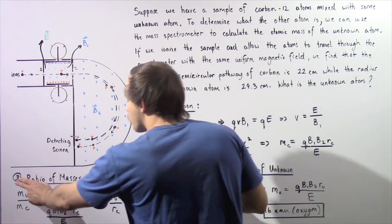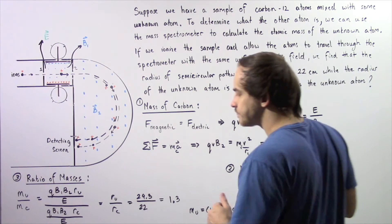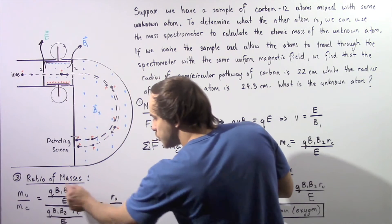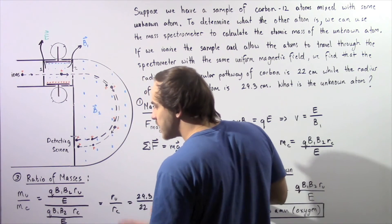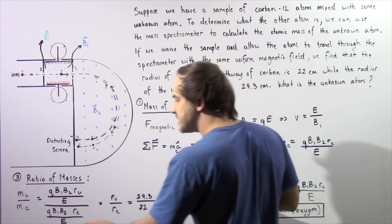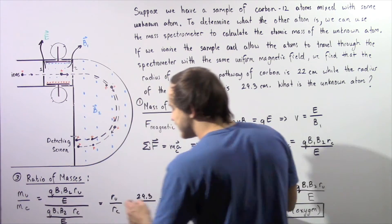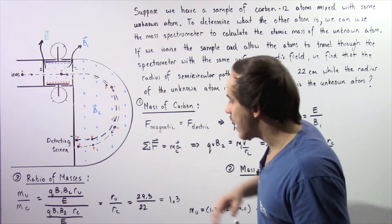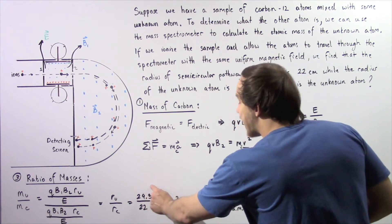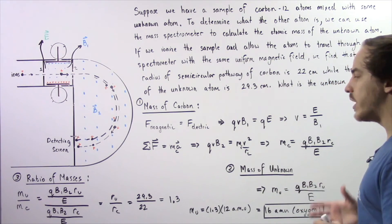In step three, we find the ratio of the unknown atom's mass equation to the carbon atom's mass equation. The Q's, B1's, B2's, and E's all cancel, leaving us with the ratio of the unknown mass to the carbon mass equal to the ratio of their radii: 29.3 cm divided by 22 cm, which gives approximately 1.3.